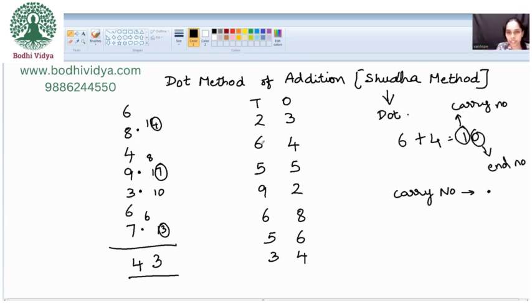Now, 2 plus 6 is 8, no carry. 8 plus 5 is 13. I will represent 1 by a dot, 3 in my mind. 3 plus 9 is 12. Again, a carry number, 2 in my mind. 2 plus 6 is 8. 8 plus 5 is again 13.